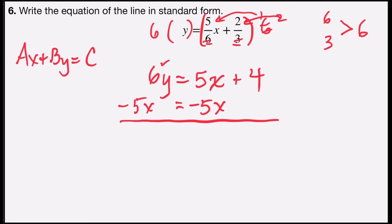On the left side of the equation, I would get negative 5x plus 6y, and on the right side, 5x minus 5x is 0, and 0 plus 4 is 4.